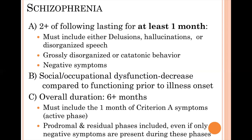Someone could have delusions and hallucinations and nothing else. Another person might have hallucinations and disorganized speech and nothing else. Someone else might have hallucinations and negative symptoms. We could keep going through all the various combinations — a lot of different ways will count under criterion A. The critical piece is that they show at least one month of delusions, hallucinations, or disorganized speech.